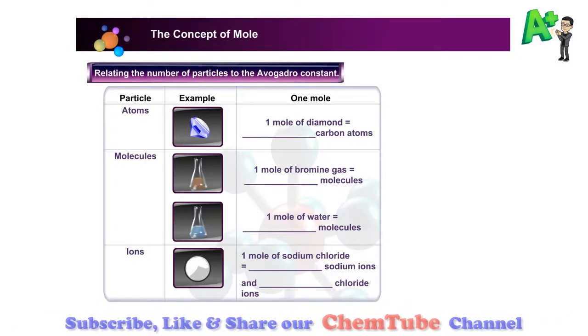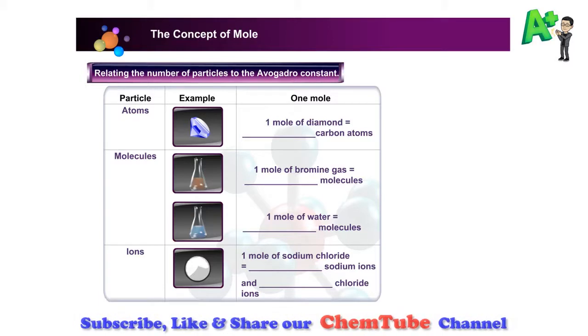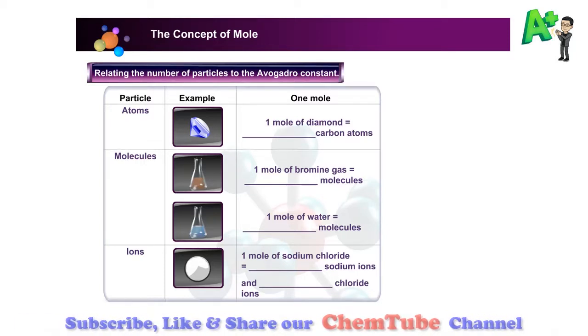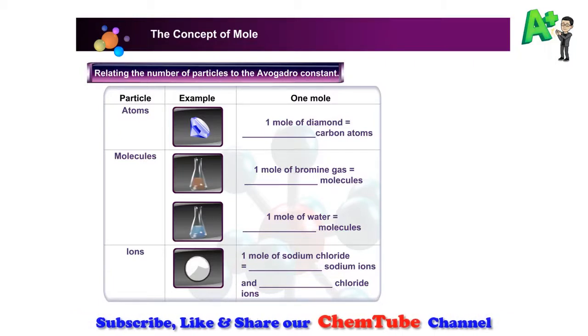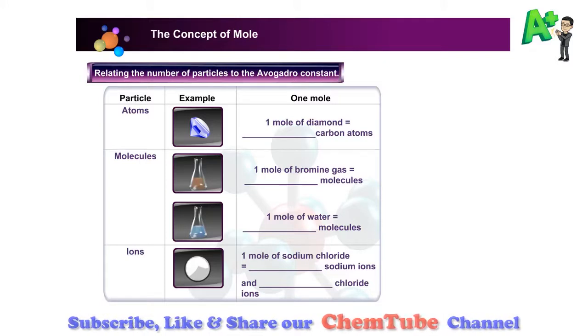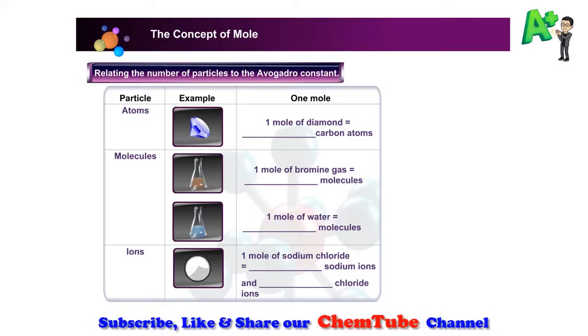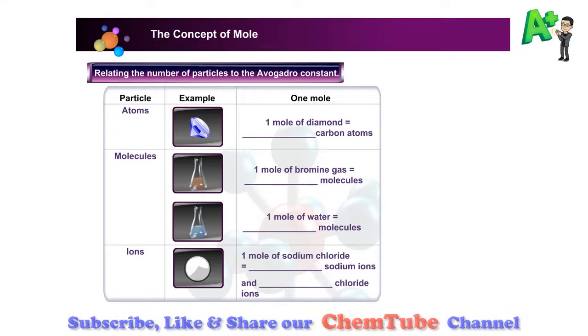One mole of bromine gas equals 6.02 times 10 to the power of 23 molecules. One mole of sodium chloride equals 6.02 times 10 to the power of 23 sodium ions. One mole of sodium chloride equals 6.02 times 10 to the power of 23 chloride ions.